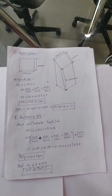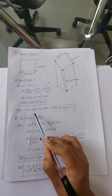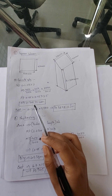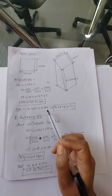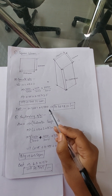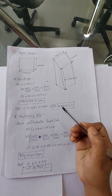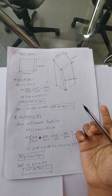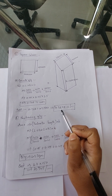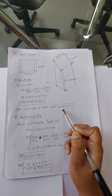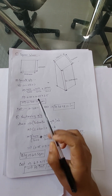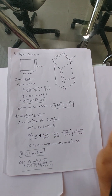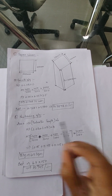The cost equals 0.70875 cubic meters × 5500 — where 5500 is the rate taken for 1 cubic meter of RMC preparation — giving a total cost of rupees 3898.12 for the concrete quantity of this square column.